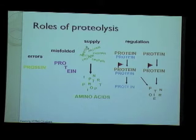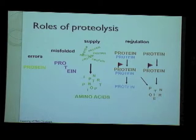Alternatively, the cell may need to regenerate amino acids for rerouting into other pathways for survival, so it may reduce the supply of a particular protein. Or in certain cases, the cell wants to regulate the amounts of certain key proteins and regulatory enzymes, so proteolysis can be involved in regulation as well.